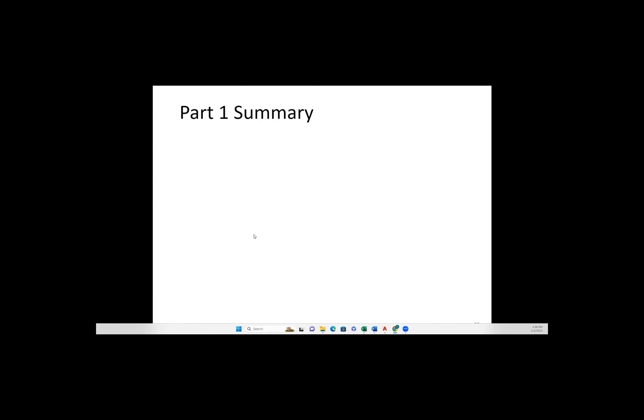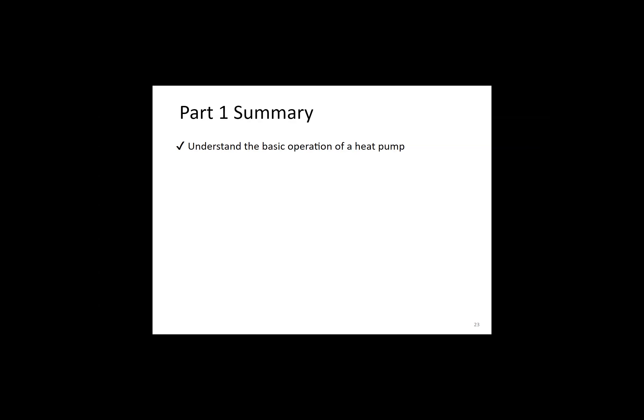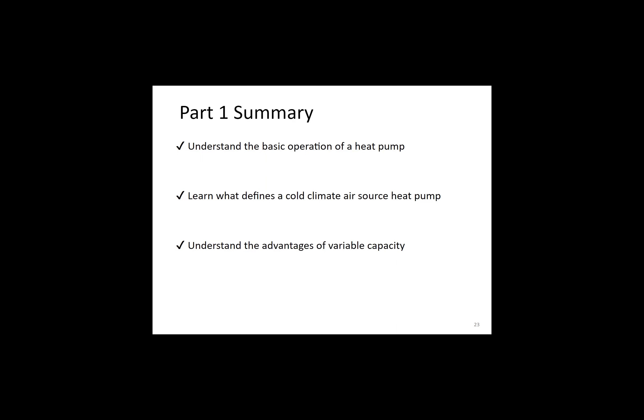To summarize part one: heat pumps move heat rather than create it — they don't burn fuel to create heat. The heat pump uses refrigerant and the vapor compression cycle to absorb heat from the outside air and transport that heat inside to maintain thermal comfort. Cold climate air source heat pumps can absorb heat from the outside air even at sub-freezing temperatures, enabled by advanced refrigerants and algorithm-driven controls. Variable capacity allows the heat pump's output to match the heating or cooling load automatically, rather than only cycling on or off to maintain temperature.